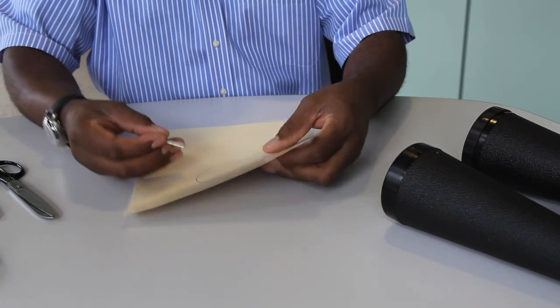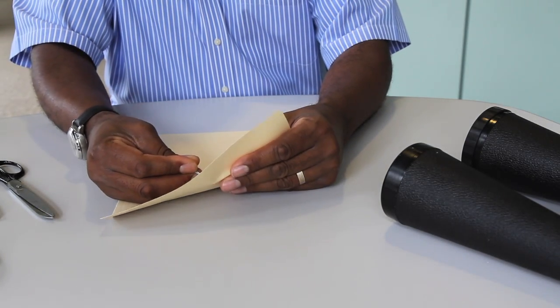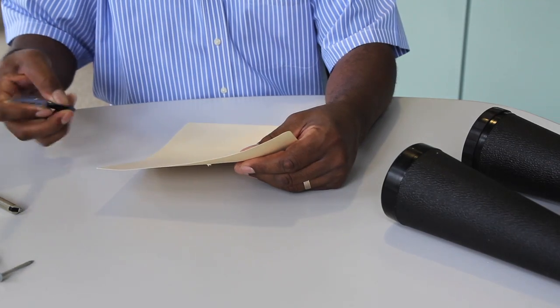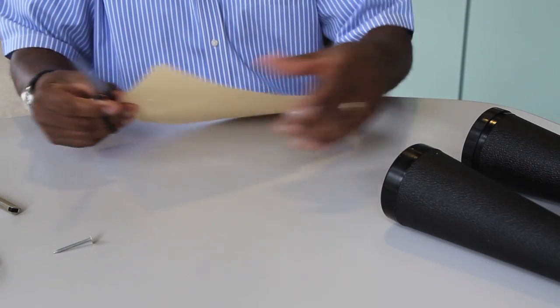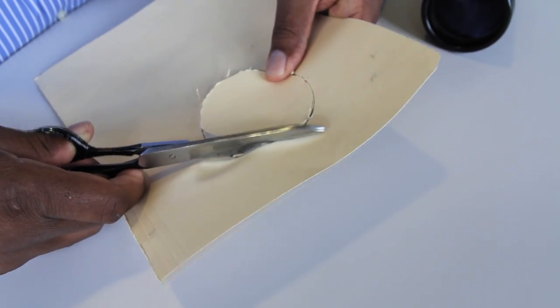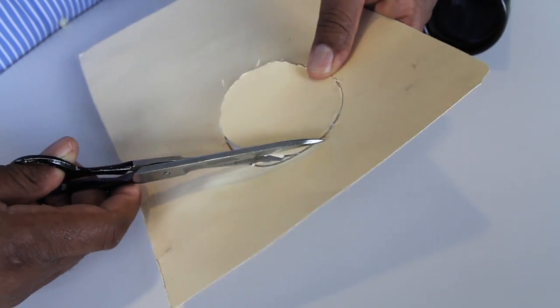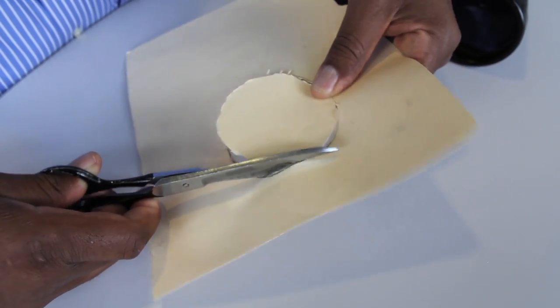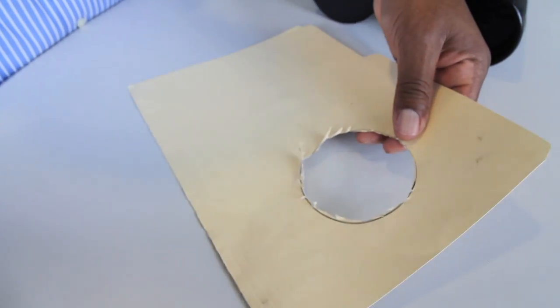Next, we'll cut that out using our scissors. I'll use a nail just to create a hole so I can get started with the scissors. And using the hole mark as a guide, we'll cut it just slightly smaller. We'd like a nice, snug fit.